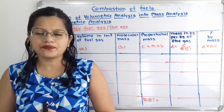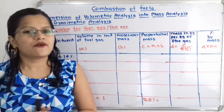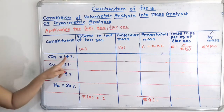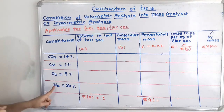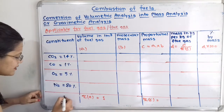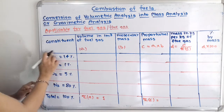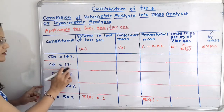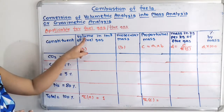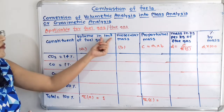We will now solve one problem. The volumetric composition for each constituent in the fuel gas is given, and we have to convert this volumetric composition into mass composition. It is given that CO₂ is 14%, CO is 1%, O₂ is 5%, and N₂ is 80%. If we add all these percentages, the total is 100%.